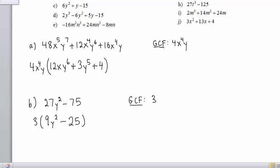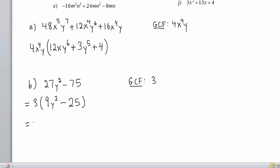But we are not done factoring. 9y squared minus 25 is a difference of perfect squares. And we know that in general, a squared minus b squared is equal to a plus b times a minus b.